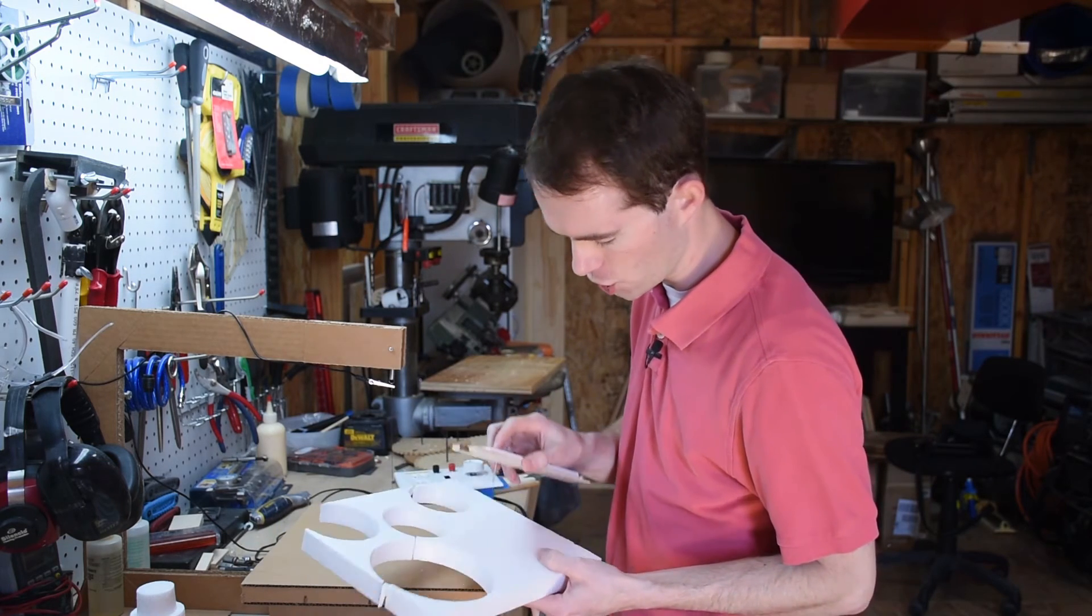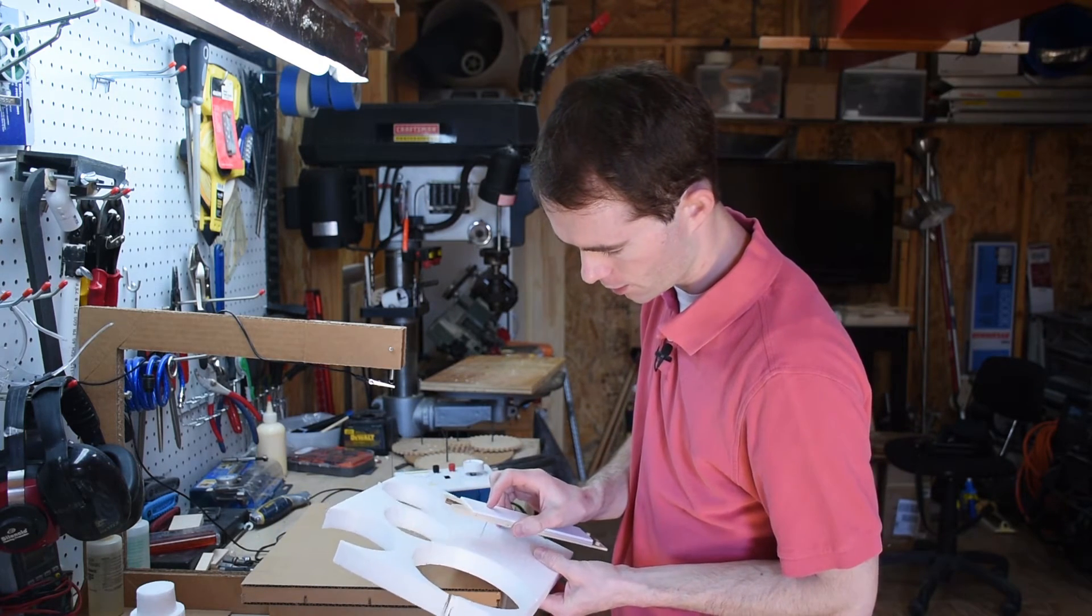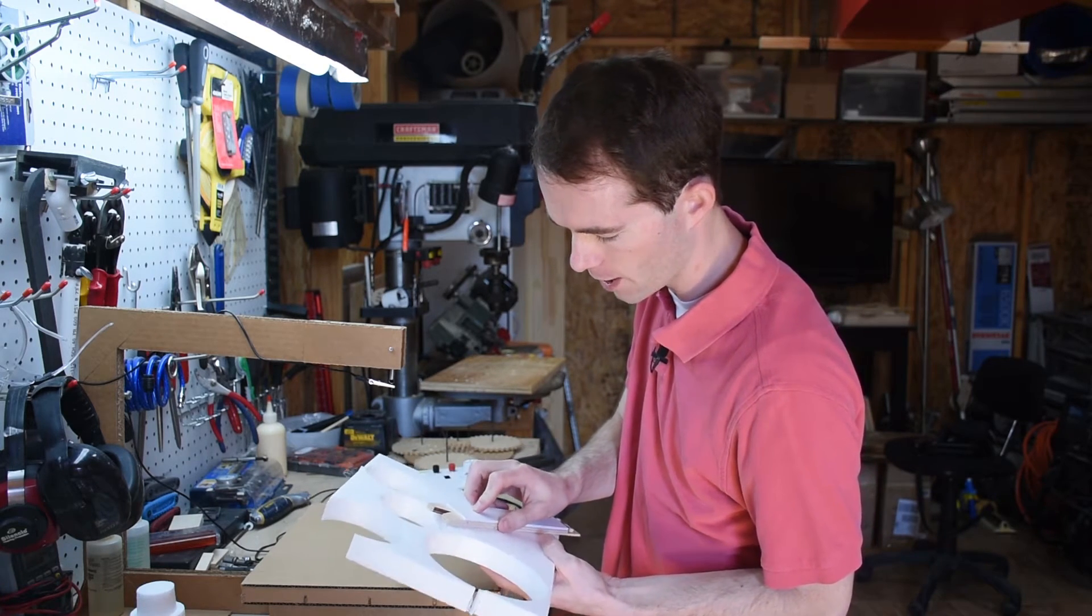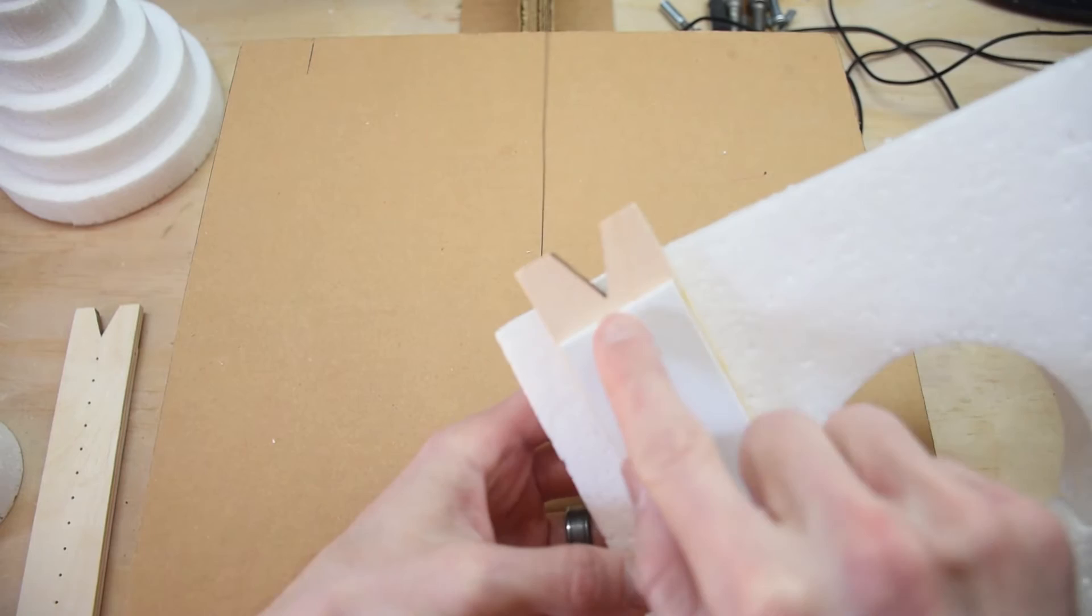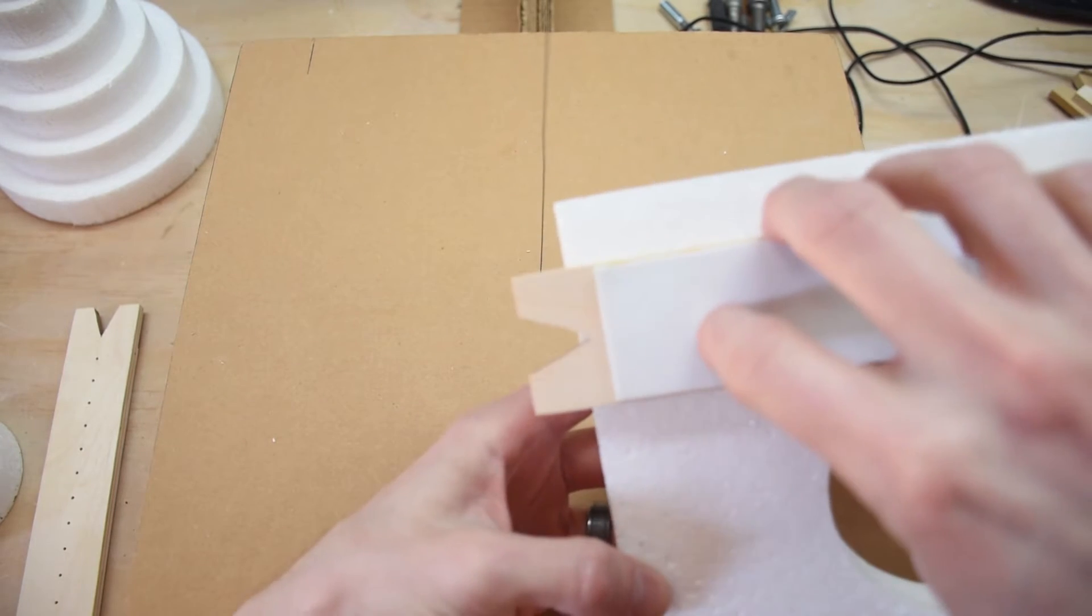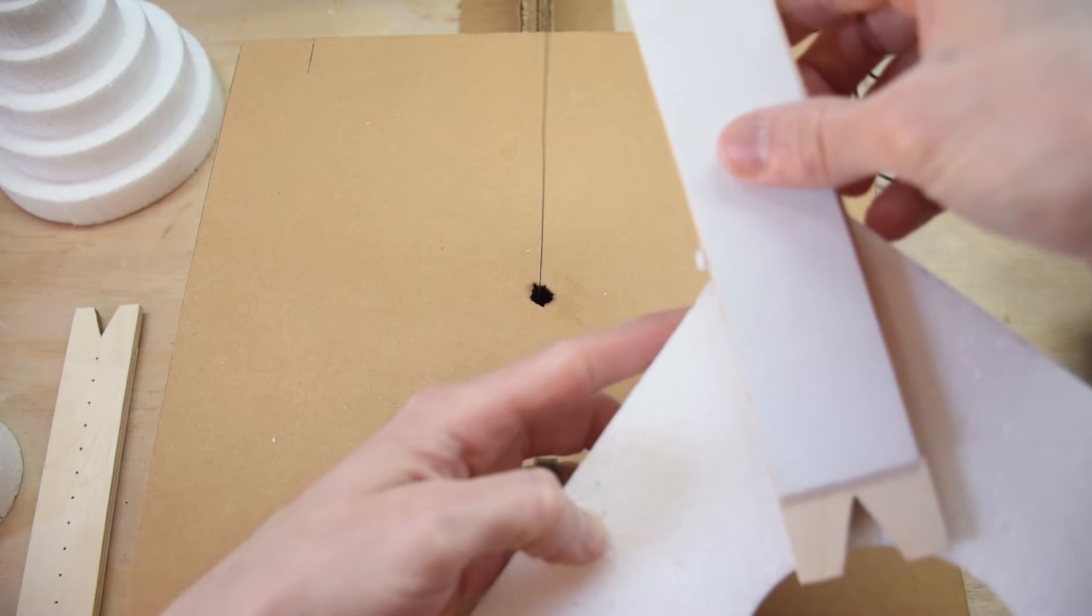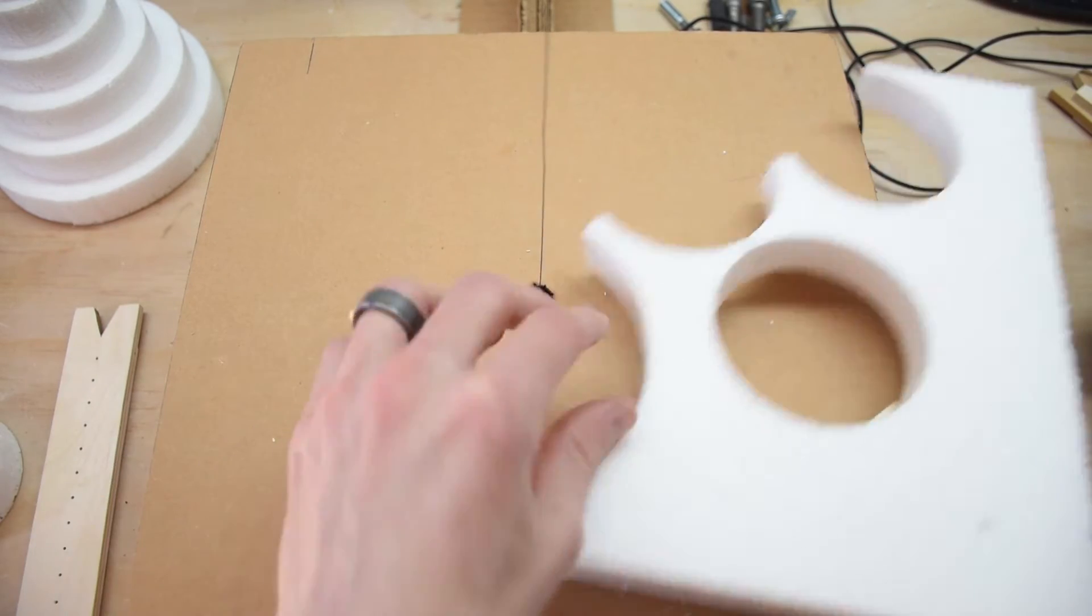So I'm going to go ahead and position this like so to cut my 3 inch diameter circle. Figure in the minimal waste there. Okay. You can see foam sticking through there. That's good. Rotate it. There's foam there. Let's come all the way around to this circle. And there's foam there. Good. So I know I can definitely cut this.